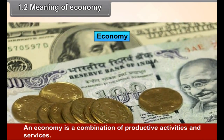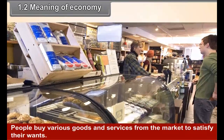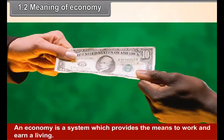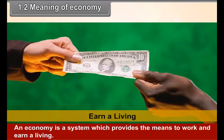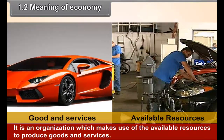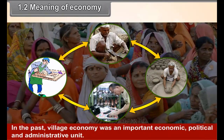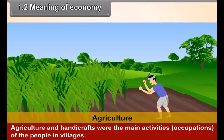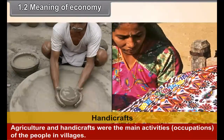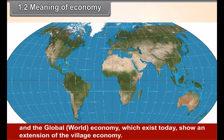1.2 Meaning of an Economy. An Economy is a combination of productive activities and services. People buy various goods and services from the market to satisfy their wants. An Economy is a system which provides the means to work and earn a living. It is an organization which makes use of the available resources to produce goods and services. In the past, village economy was an important economic, political and administrative unit. Agriculture and handicrafts were the main activities of the people in villages. The state Maharashtra, as well as national India and the global world economy which exist today, show an extension of the village economy.